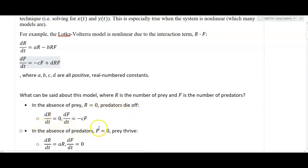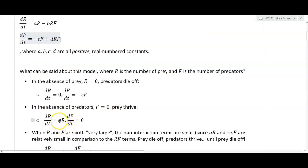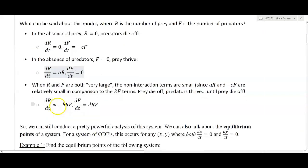In the absence of predators, when F equals zero, if we put in F equals zero into dR/dt, we get dR/dt equals A times R. Since A is a positive constant, that means the prey are going to thrive. They're going to continue to increase in population size, reproduce as we know rabbits do. dF/dt, if we put in zero for F in both terms, we get dF/dt equals zero, which makes sense.